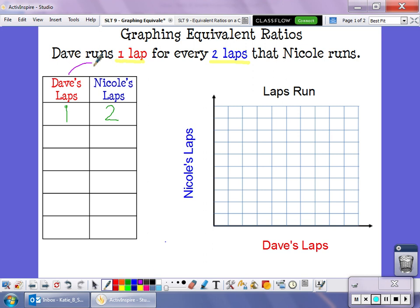To go from Dave's laps to Nicole's laps, all I'm doing is times two. So I can use that rule to help me figure out all of the combinations of numbers I have.